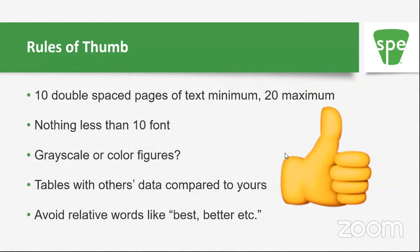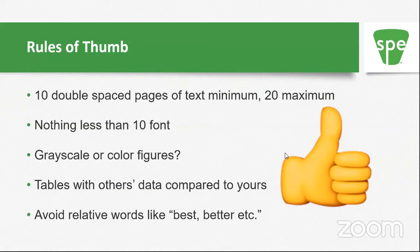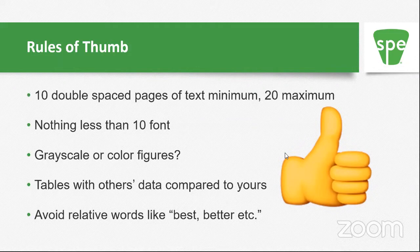One thing I really like — and I've done this many times — is if you have data you're comparing with other papers, set up a table showing here's what we did, here's what they found, here's what they did. It helps the reader understand where your study fits and what others have done. Avoid relative words like 'best' or 'better' — for example, 'better mechanical properties' doesn't make sense because sometimes you want more flexibility and sometimes you want more stiffness. In scientific literature you just don't want to use those terms.